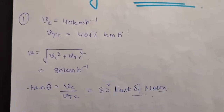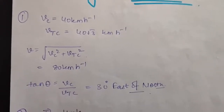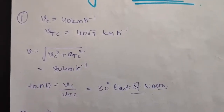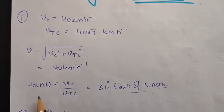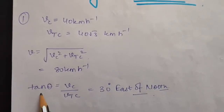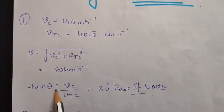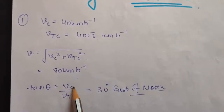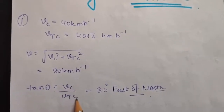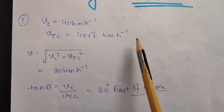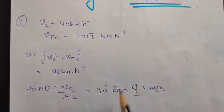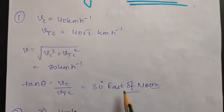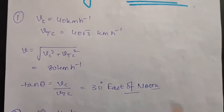Now, in the question the direction of motion of the train is also asked. As you have done in theory lectures, the direction of motion will be calculated by tangent theta, and that will be vc upon vtc, that is 40 upon 40 root 3. When you solve it you will get the answer to be 30 degrees east of north.